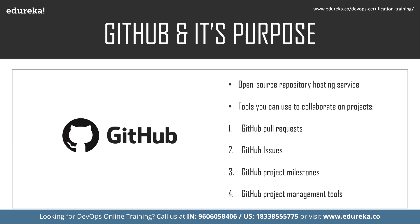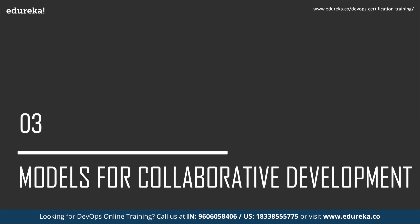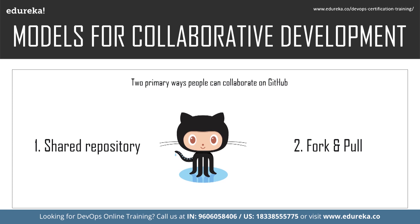Now let's move on and understand models for collaborative development. There are two primary ways people collaborate on GitHub: the first is the shared repository, and the second is fork and pull. Within a shared repository, individuals and teams are explicitly designated as contributors with read, write, or administrator access. For open source projects where anyone can contribute, managing individual permissions can be challenging, but a fork and pull model allows anyone who can view the project to contribute.